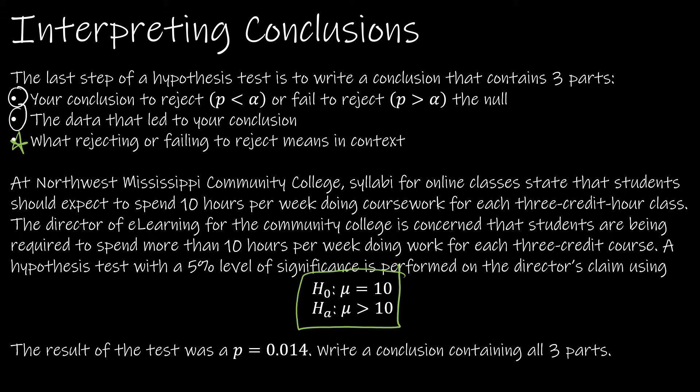Let's take a look at this question. We actually have already looked at this question and created these hypotheses in our last video. We're looking at spending 10 hours a week doing coursework, and we're concerned that students are being required to spend more than 10 hours per week. So here's our two hypotheses. Let's say we ended up - I've skipped over all of the fun calculations - let's say I have a p-value of 0.014.